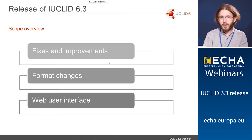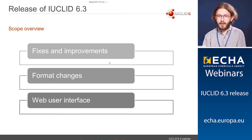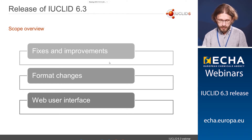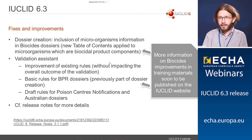Let's go back to the scope of Euclid 6.3. This scope is composed of three main areas: first, the series of fixes and improvements introduced in all Euclid releases; then some specific information about format changes introduced in this version; and the aspects of the web user interface. All fixes and improvements included in this release can be seen in the release notes available on the Euclid 6 website. Here is a short summary of improvements that might be of interest for some users.